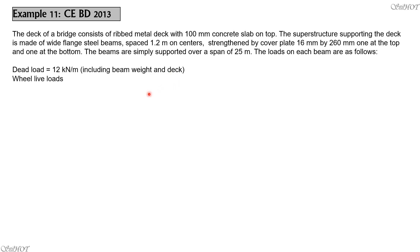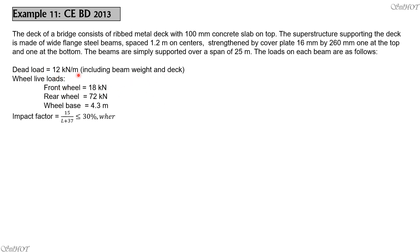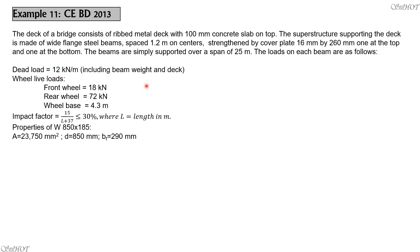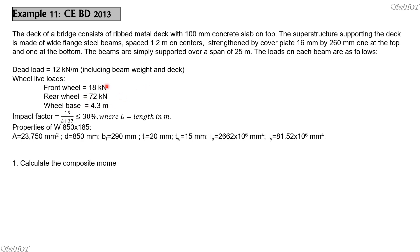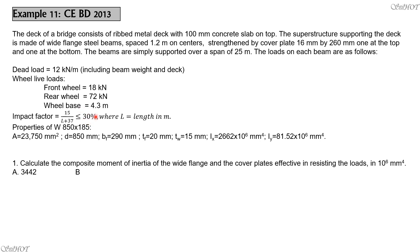The loads on each beam are as follows. Dead load including beam weight and deck: 12 kN per meter. Live loads: front wheel 18 kN, rear wheel 72 kN. Wheel base is 4.3 meters, the distance between the front and rear wheels. Impact factor is given by 15 over L plus 37 and should not exceed 30%, where L is the span length in meters.